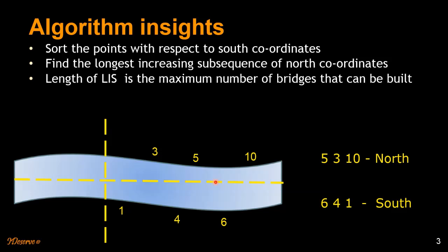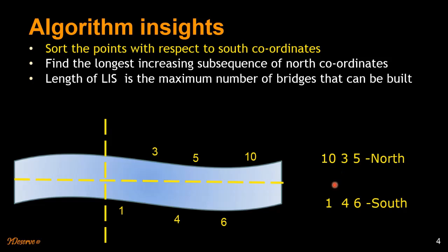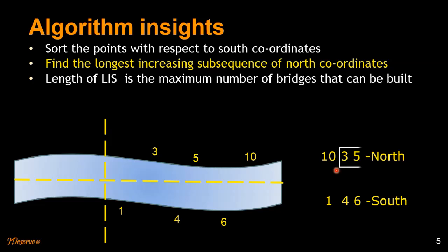Let's go through the example: northern points 5, 3, 10 and southern points 6, 4, 1. The first step is to sort by southern coordinates. Sorting 6, 4, 1 gives us 1, 4, 6. The corresponding northern points move with them: 10, 3, 5. The next step is to find the longest increasing subsequence of the northern coordinates 10, 3, 5. The LIS is 3, 5 — so we can build 2 bridges on this river.